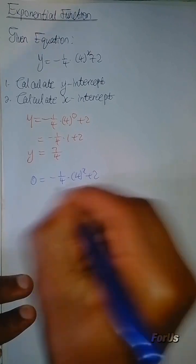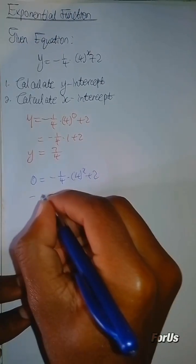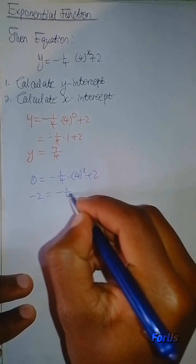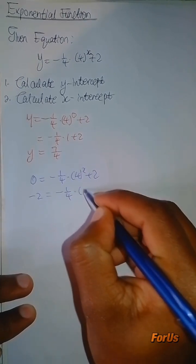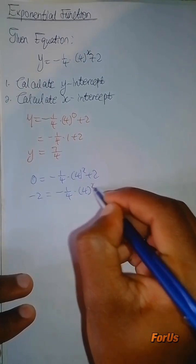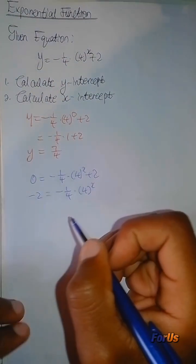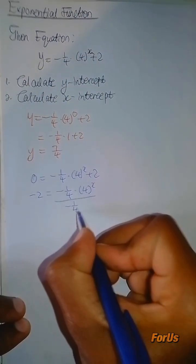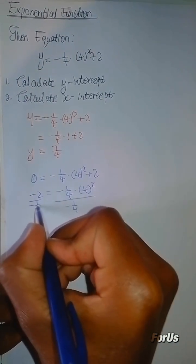Then you can say, take this 2 to this side, it's going to be negative 2 equal negative 1 over 4. You're going to say 4 to the x. Next, you're going to divide both sides by negative 1 divided by 4.